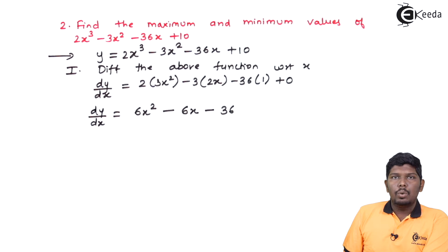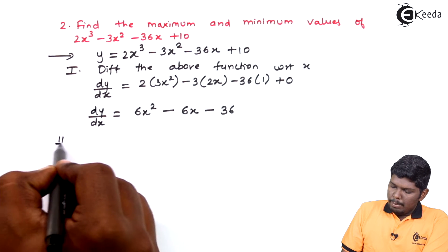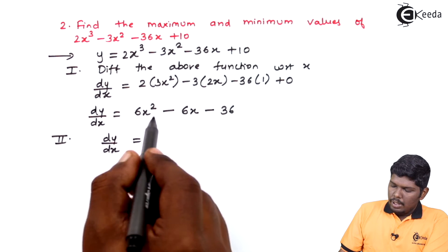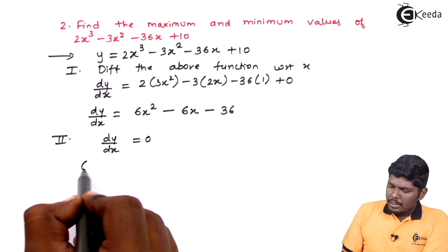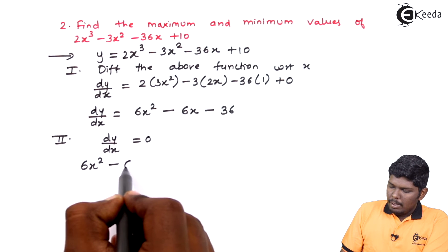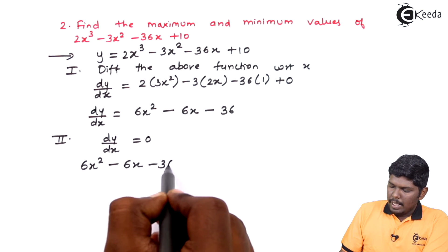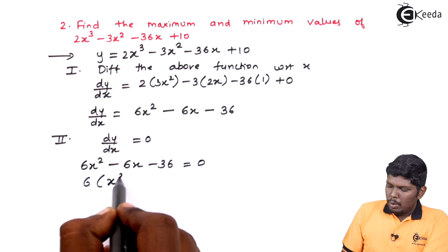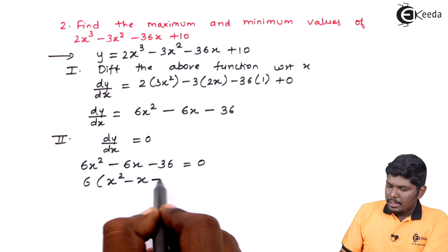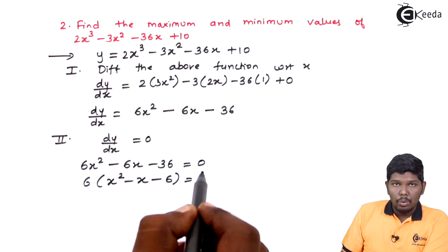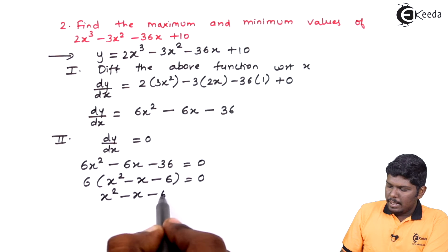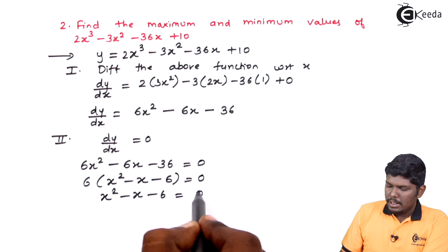The next step is to equate dy/dx = 0. Step number 2: dy/dx = 0. So 6x² - 6x - 36 = 0. Taking 6 as common, this gives x² - x - 6 = 0.